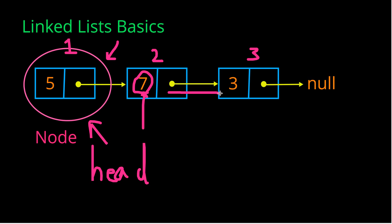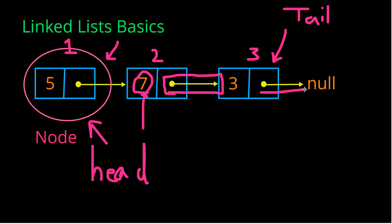The second part of the linked list is what's called a pointer, and this pointer is what points to the next node in the linked list. At the end of our linked list, we have the last node, which is often referred to as the tail node, and this tail node is unique because its pointer points to null or none, which indicates there are no more nodes in that linked list after this one.